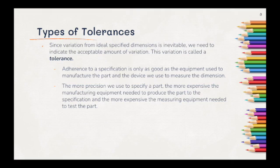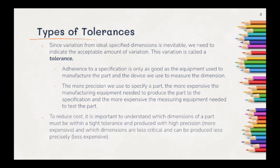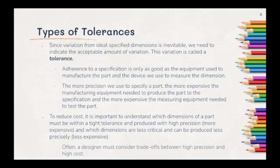If we need a really precise part, it's going to cost a lot of money. To reduce cost, it's important to understand which dimensions of a part have to be within a tight tolerance and produced with high precision, the more expensive parts, and which dimensions are less critical and can be produced less precisely, making them less expensive. Often, a designer must consider trade-offs between high precision and high cost.